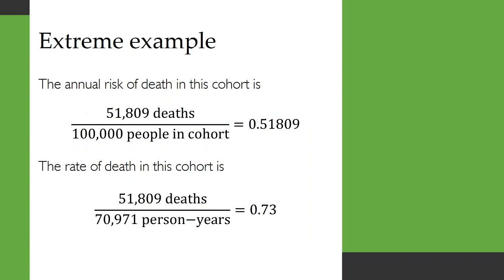The annual risk of death in this cohort is 51,809 deaths divided by 100,000 people in the cohort. So that's 0.51809.